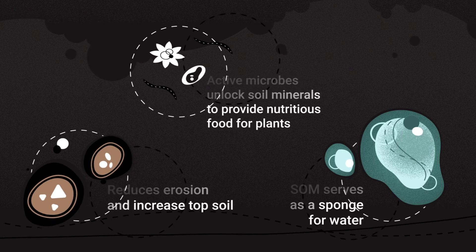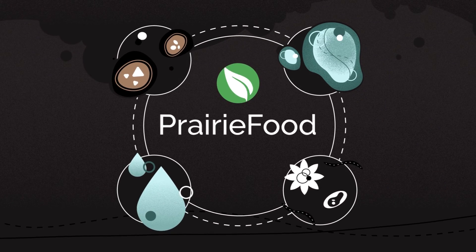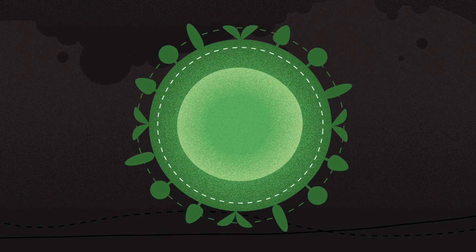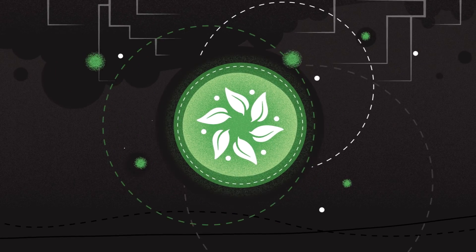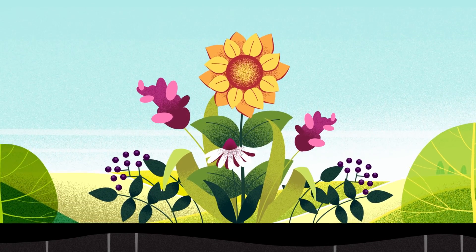reducing erosion and increasing yields. With prairie food, farmers can rapidly increase soil organic matter, microbial activity, crop yields, and save water.